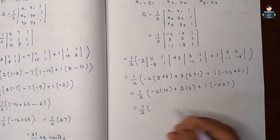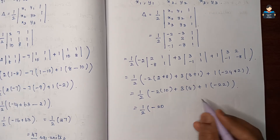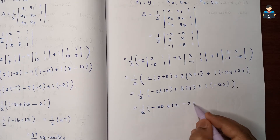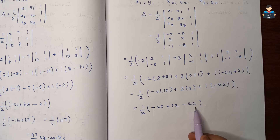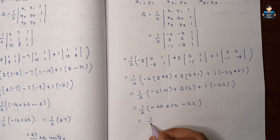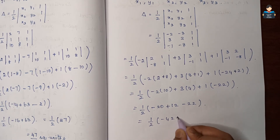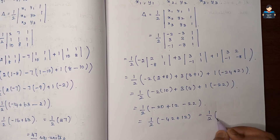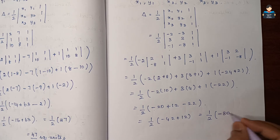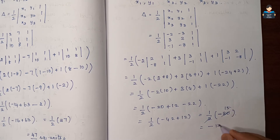So 1 by 2 into minus 20 plus 12 minus 22. Minus 20 minus 22, same sign so add, giving minus 42. Then 1 by 2 into (minus 42 plus 12), which equals 1 by 2 into minus 30, which simplifies to minus 15.